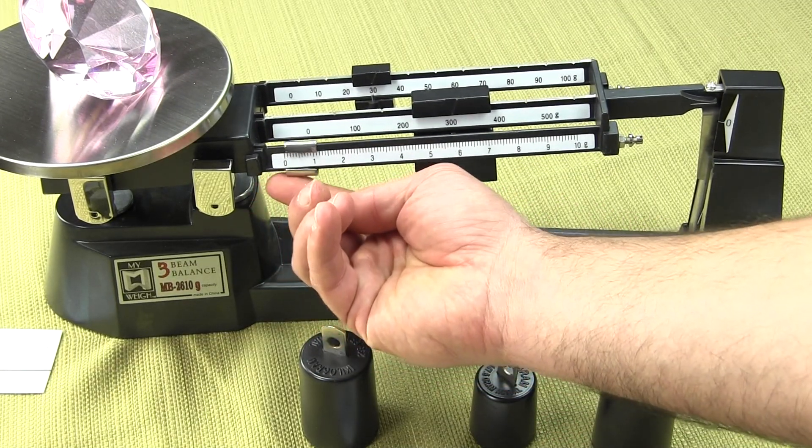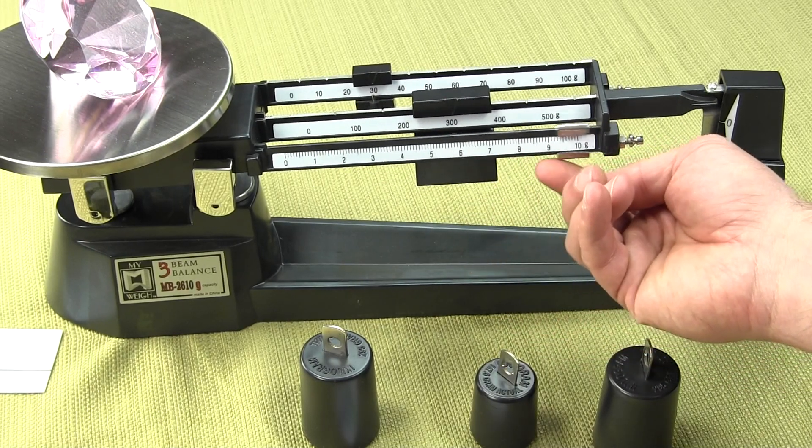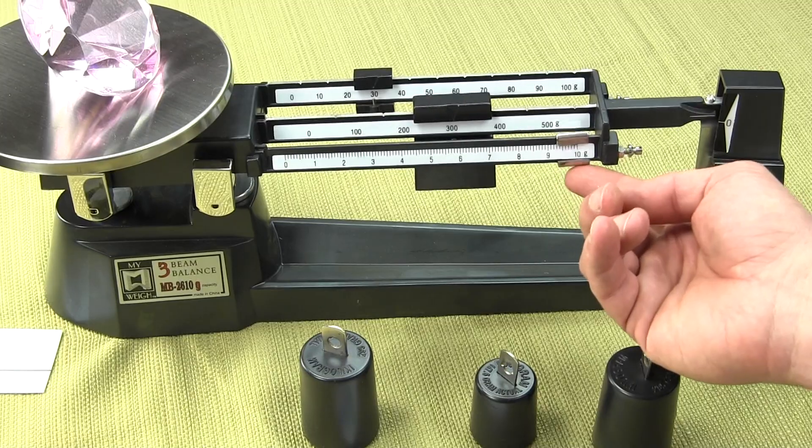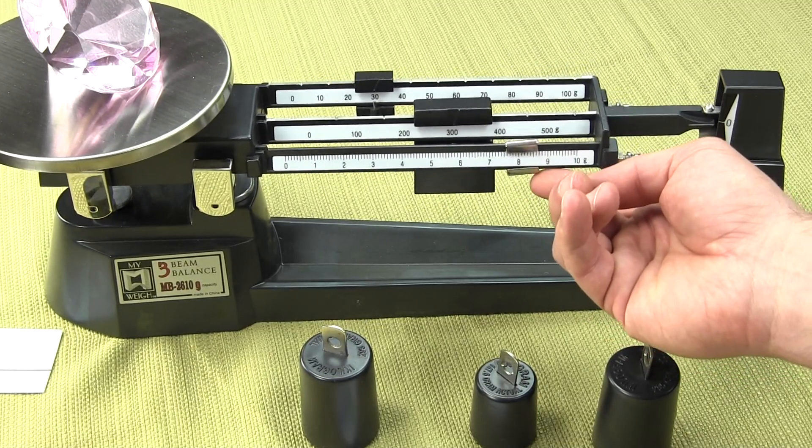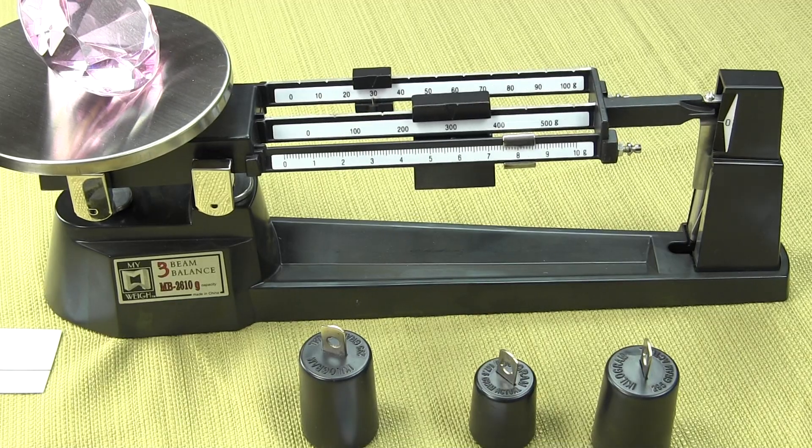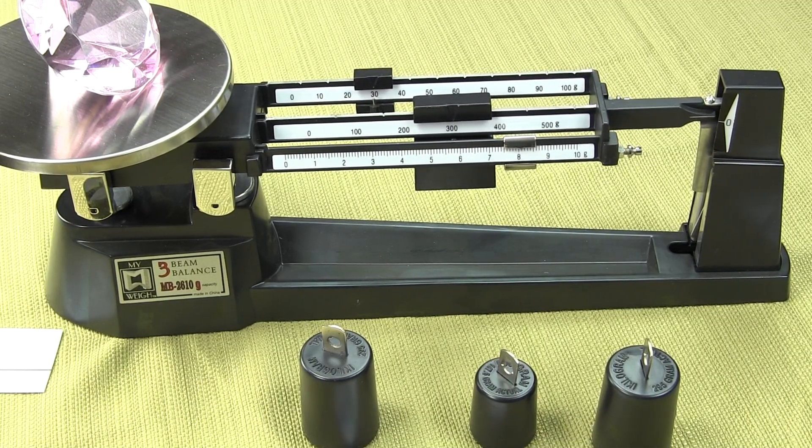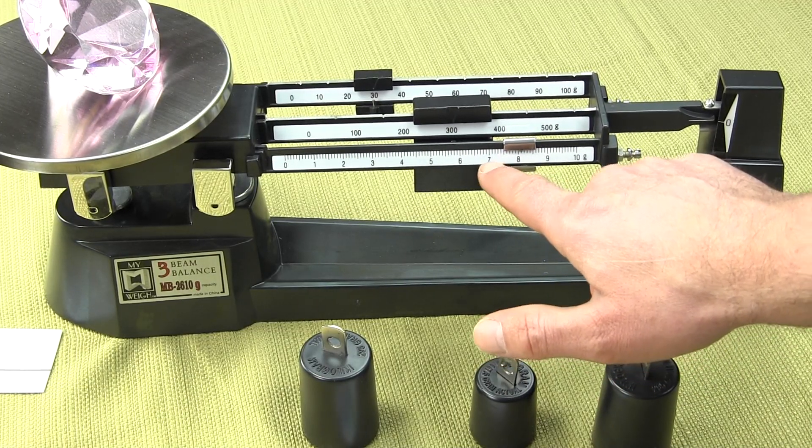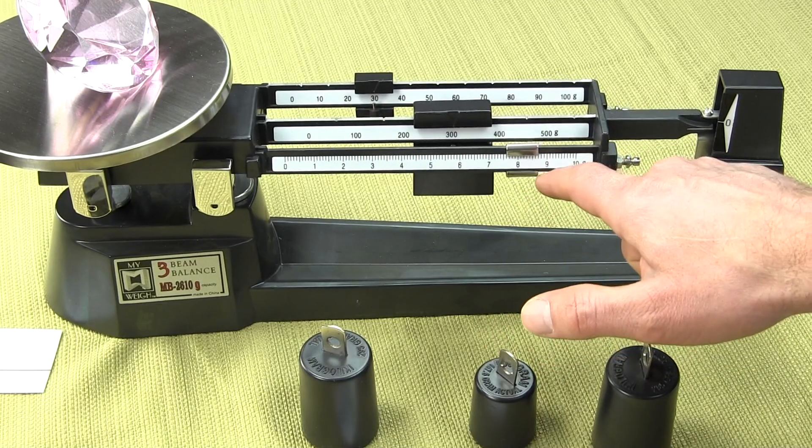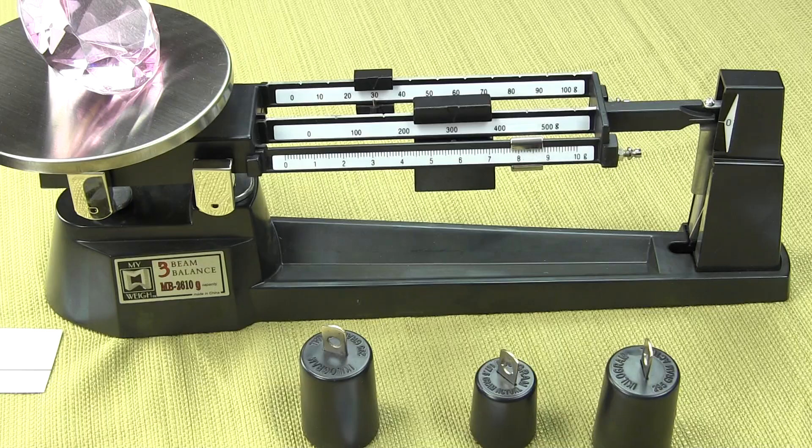Now we want to slide across the front poise. Really, you're supposed to slide it all the way to the end and then start bringing it back until that beam comes up. That looks pretty good right there. It's a little high. The beam is high, so I want to add some more weight to it.